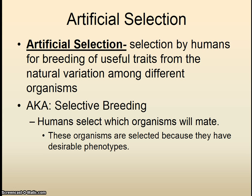We already learned about this idea. We called it selective breeding when we were talking about indirect genetic modification of organisms. Selective breeding is the same thing as artificial selection. Humans select which organisms mate, and we do the selecting based on desired phenotypes. Any domestic animal, plant, anything you use for a pet, anything you see in the grocery store — they're all products of selective breeding, which is also known as artificial selection.